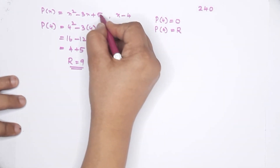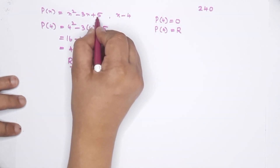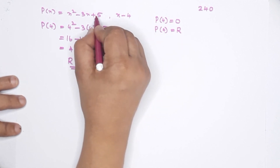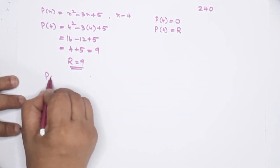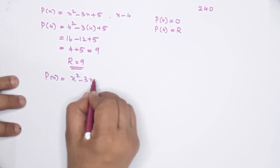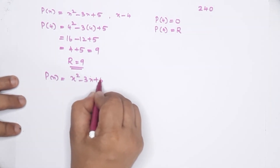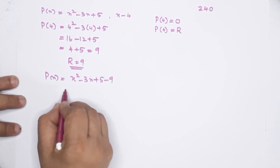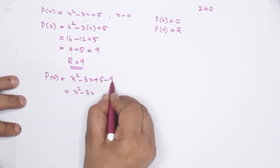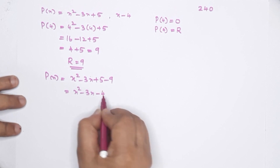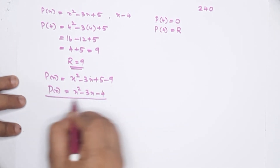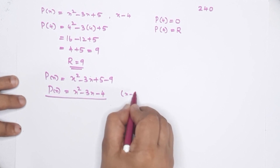The remainder is 9. If we subtract this remainder, then P of x minus 9 gives us the new polynomial. So P of x is equal to x squared minus 3x plus 5 minus 9, which gives x squared minus 3x minus 4. In this polynomial, x minus 4 is a factor.